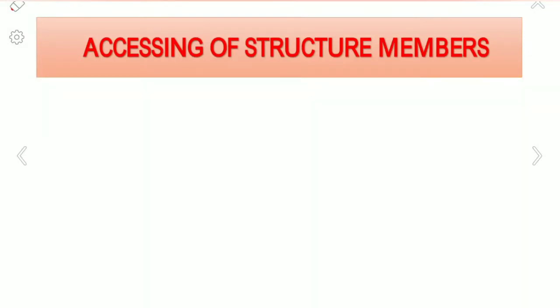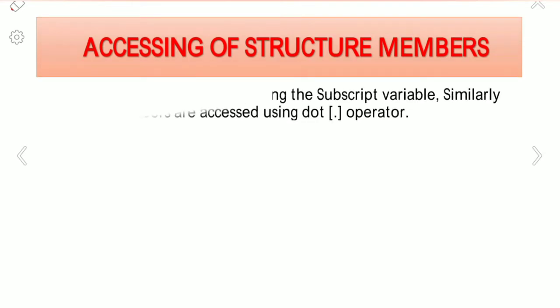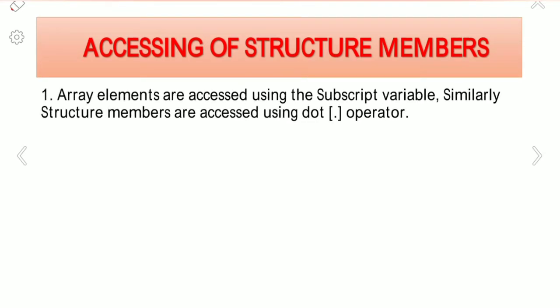Hello everyone, welcome to my channel. In this video we are going to learn about how to access structure members. Array elements are accessed using subscript variables, like E[i] or E[j]. If you want to access the first location in the array then you will use the subscript variable E[0].